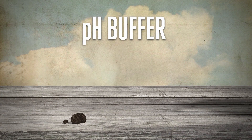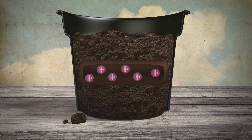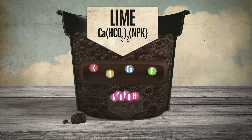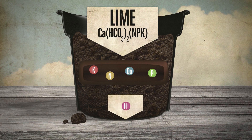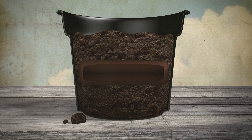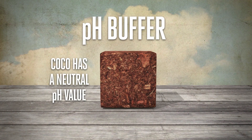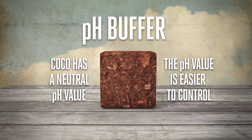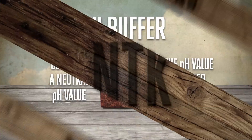Then we have the pH buffer. Potting mix is made from acidic peat, and because of this acidity, lime is added to bring it to the right pH value. If you water the plant with a nutrient solution with a high or low pH, the lime buffer will neutralise it, at least until the lime in the peat runs out. Potting mixes can help to neutralise any mistakes made by the grower. Coco is basically neutral in its pH value and will not neutralise the pH value of the nutrient solution. This means that pH values are easy to control in coco, but it is not as forgiving as potting mixes.